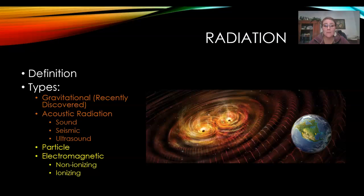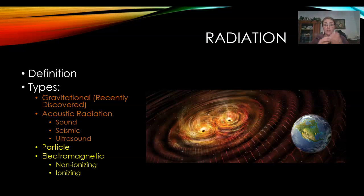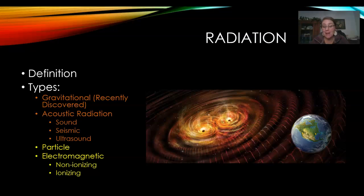There are a bunch of different types of radiation — I have not listed all of them here. The ones that are in orange you don't really need to write down. Gravitational radiation was recently discovered — we have gravitational waves now. And so this is an artist's rendition of what that kind of looks like. The waves in gravitational waves are literally bending and smushing space-time, which is pretty cool.